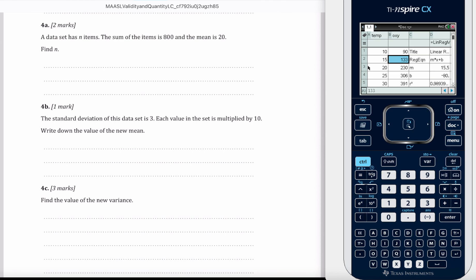Let's go with question four. A data set has n items. The number of items is 800 and the mean is 20, find n.